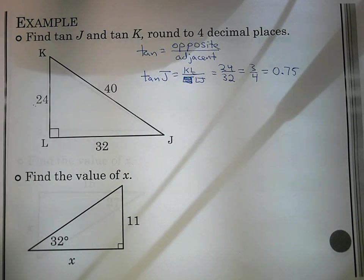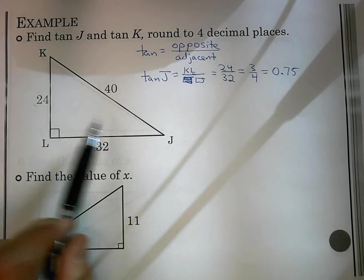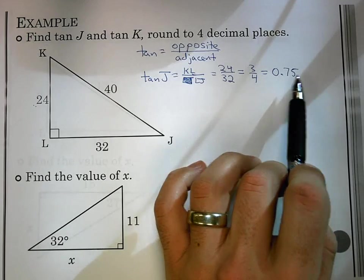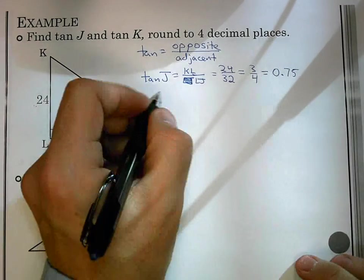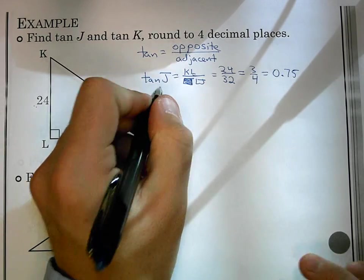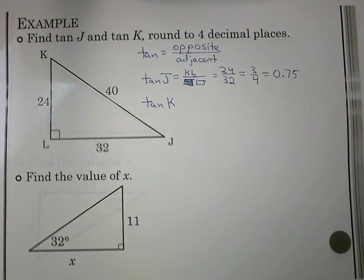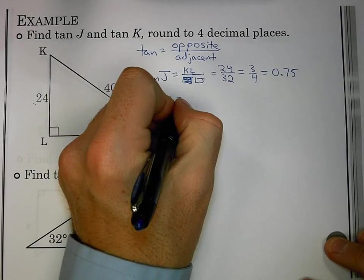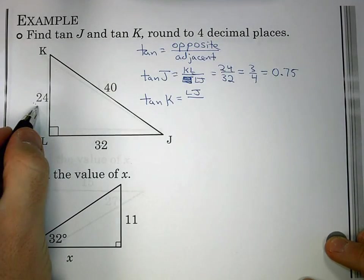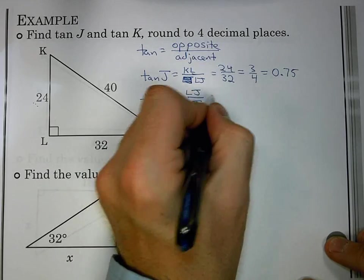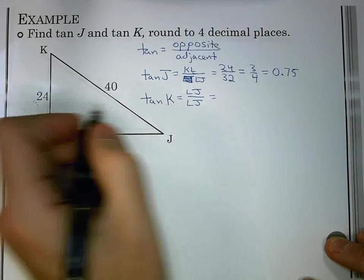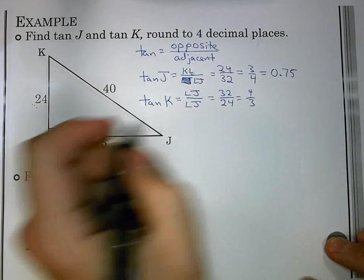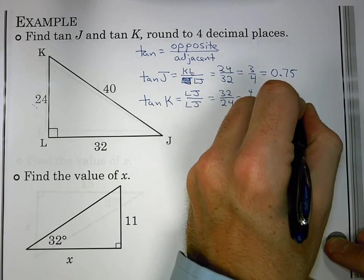It says four decimal places, but that would be perfectly fine. That describes the ratio between those two sides. Let's now look at tangent of K. Tangent of K is going to be its opposite side, LJ, and its adjacent side is LK. Plug in values, we get 32 over 24. That reduces to be four thirds. We put that in our calculator, and it comes out to be 1.3333.